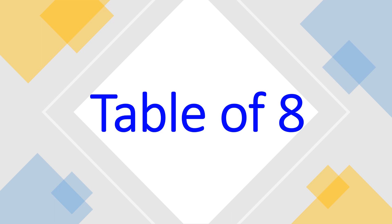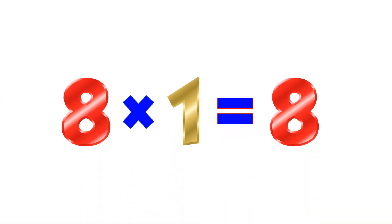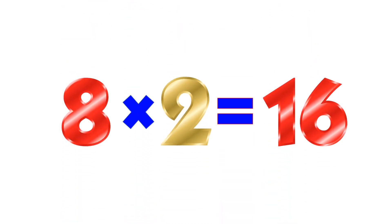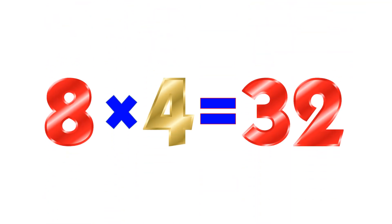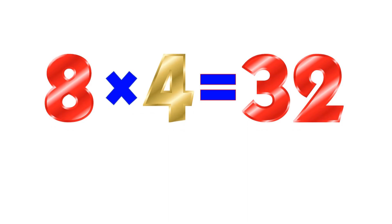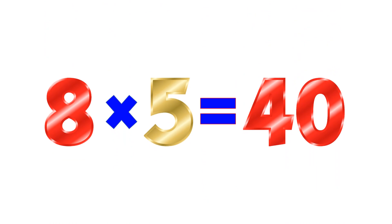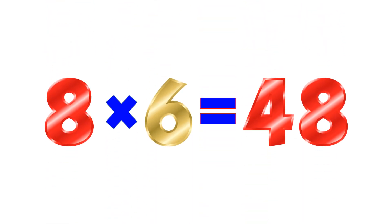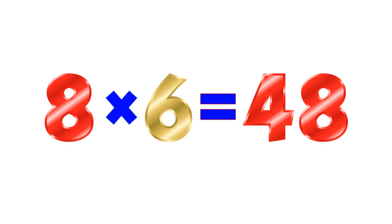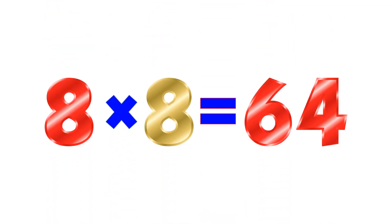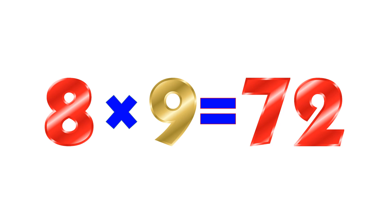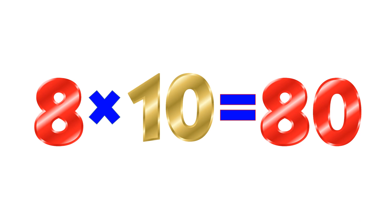Table of 8. 8×1=8. 8×2=16. 8×3=24. 8×4=32. 8×5=40. 8×6=48. 8×7=56. 8×8=64. 8×9=72. 8×10=80.